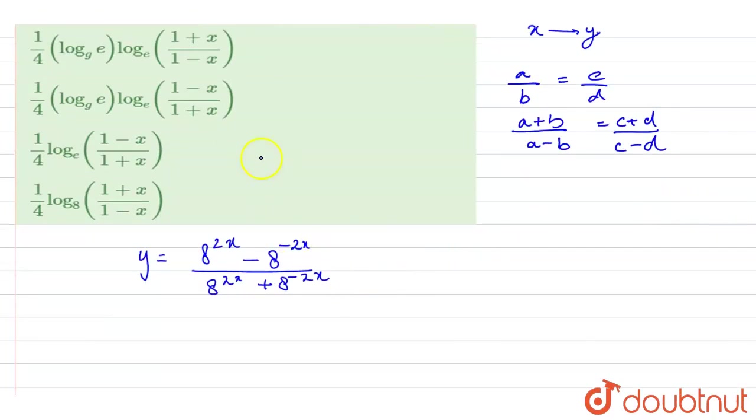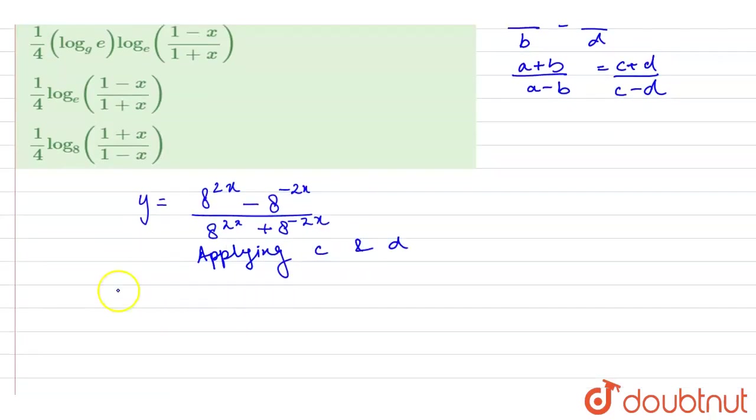So when we apply it, applying C and D we get y plus 1 upon y minus 1 is equal to 8 to the power 2x minus 8 to the power minus 2x plus 8 to the power 2x plus 8 to the power minus 2x upon 8 to the power 2x minus 8 to the power minus 2x minus 8 to the power 2x plus 8 to the power minus 2x.